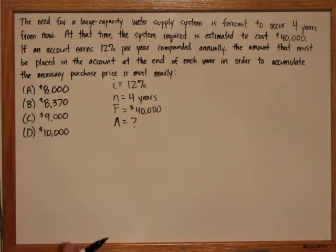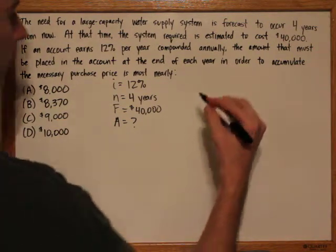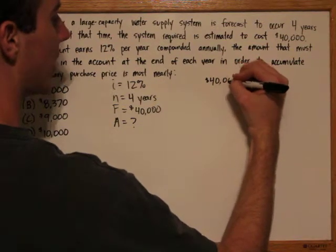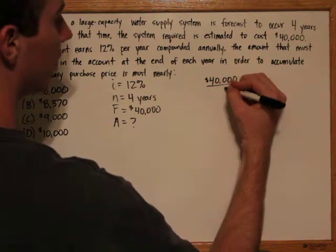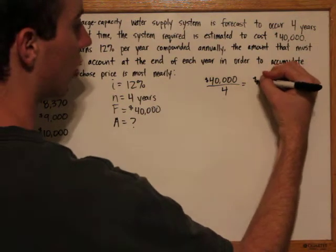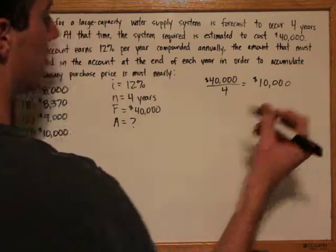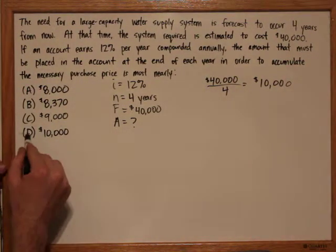So if this problem didn't have interest, it could be solved very easily. You would take the final amount of $40,000 and divide it by the number of payments, which is four, and you get $10,000 per year. However, this problem has interest, so we can immediately eliminate d.